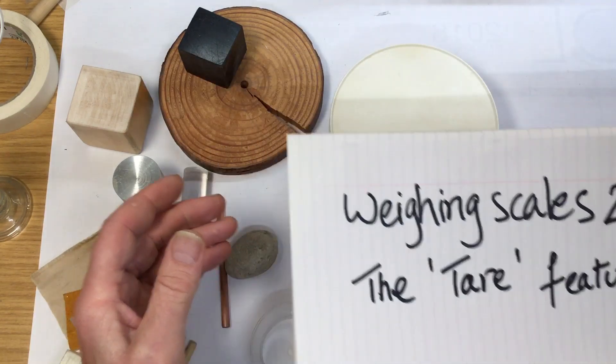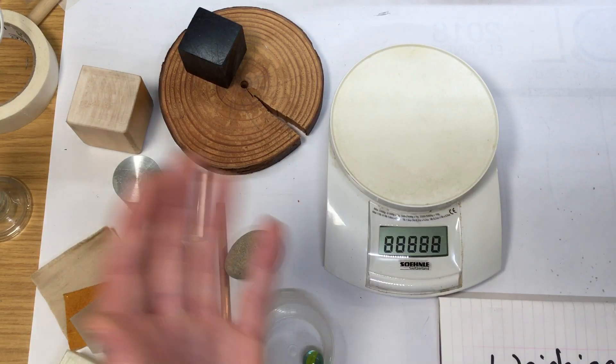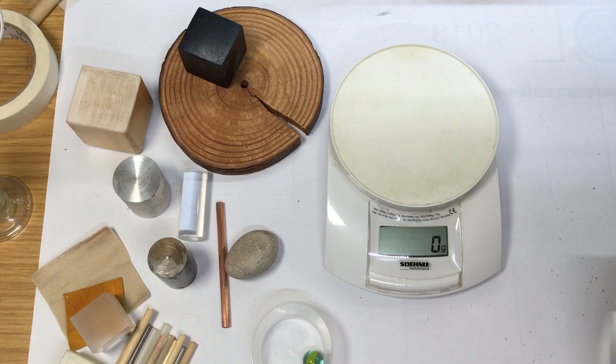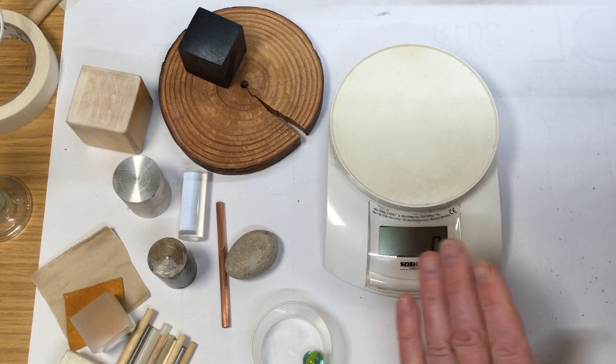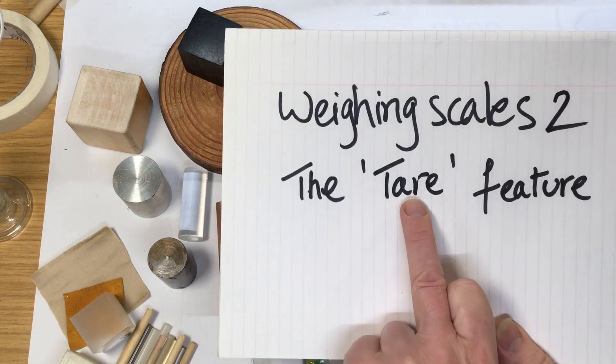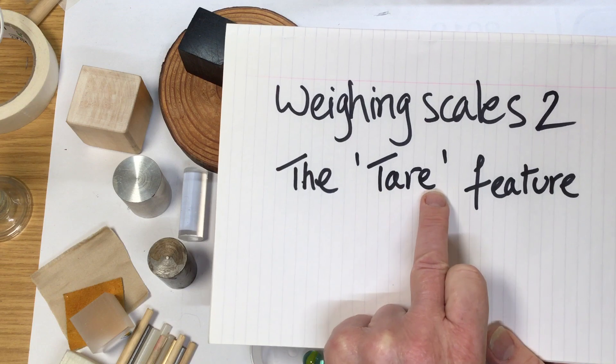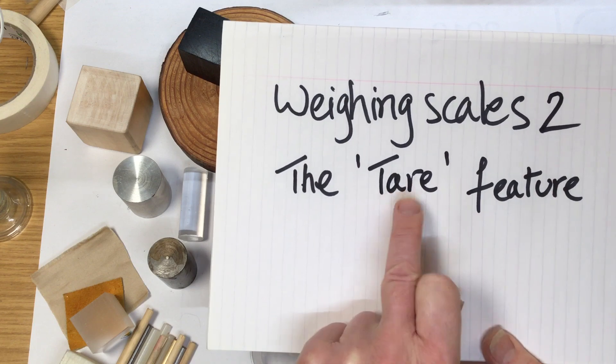Right, in the last video we looked at the scales - press the button to reset, turn it back off again. This one's got a timer so it turns itself off, but there is a strange feature which is very useful, a function called the tare feature.